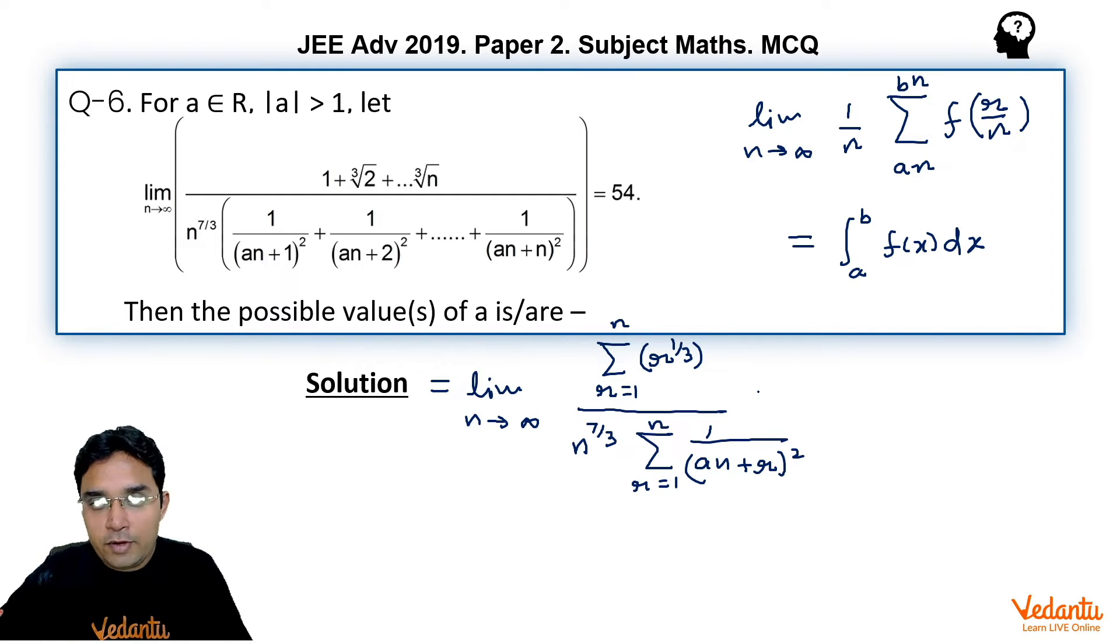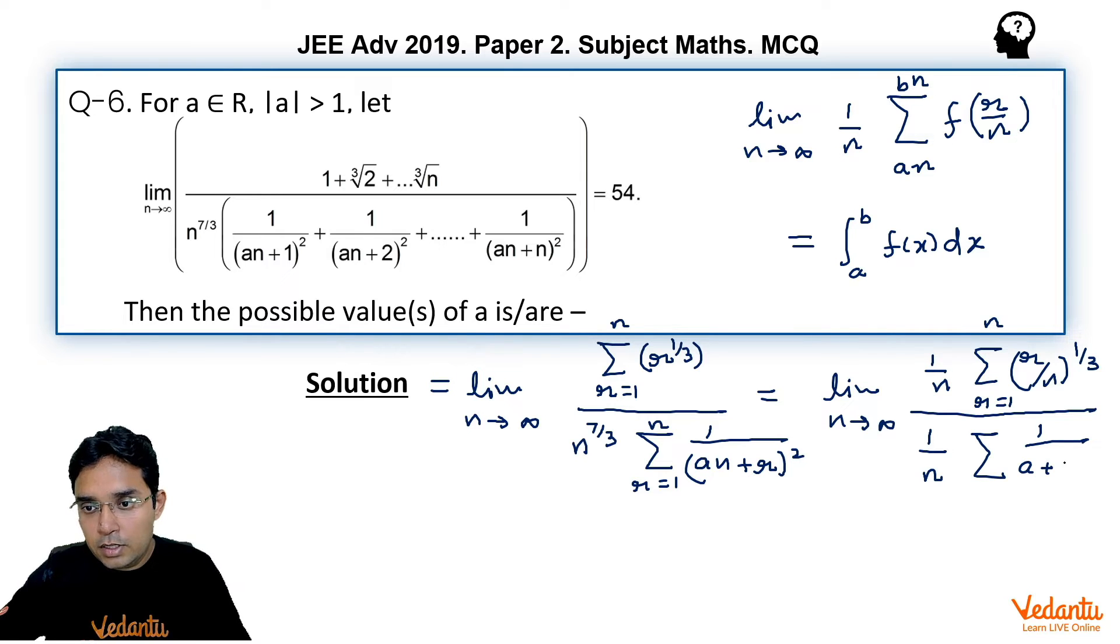Now if I simplify these terms we can write them as in the numerator 1 upon n sigma (r/n) raised to the power 1/3 limit of r is from 1 to n upon this can also be written as 1 upon n sigma 1 upon (a + r/n) whole square. You can check how these powers of n have been redistributed but they will be same you can check.